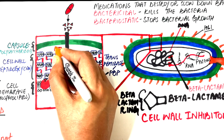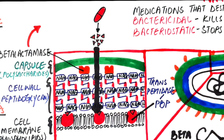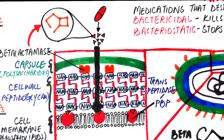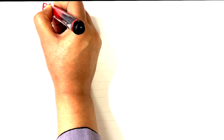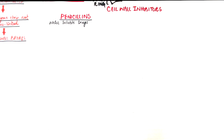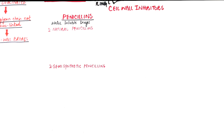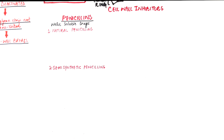Beta-lactamases, as the name implies, are a class of enzymes that break open the beta-lactam ring within a beta-lactam drug. More than 1,800 different beta-lactamase enzymes have been documented in various species of bacteria. Let's talk about penicillin and cephalosporin drugs individually, both of which inhibit bacterial cell wall synthesis. Starting with penicillins — penicillin drugs are water-soluble drugs and are of three types: the natural penicillins, the semi-synthetic penicillins, and the anti-staphylococcal penicillins.